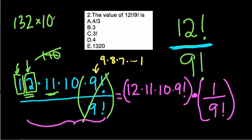Then times 10, that's another easy way to multiply, is 1,320, and there's our answer, which is E.